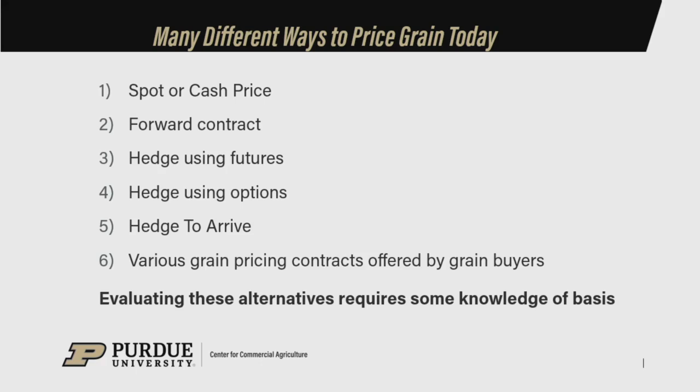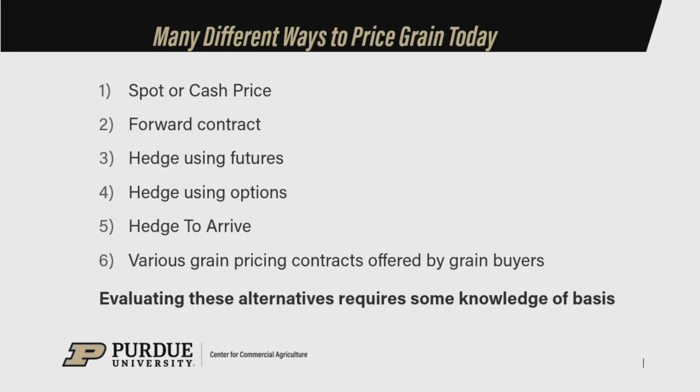The point we want to make is that regardless of where we're looking on this list, in order to make a decision and pull the trigger on selling some grain, regardless of what tool you want to use, you need to have some knowledge of basis. All of those tools have an aspect where we need to either understand or evaluate the basis bid that underlies it, or understand when we want to set the basis for that particular tool in terms of timing. Using any of those tools requires some knowledge of basis — or at least you'd be better off with a better knowledge of basis.